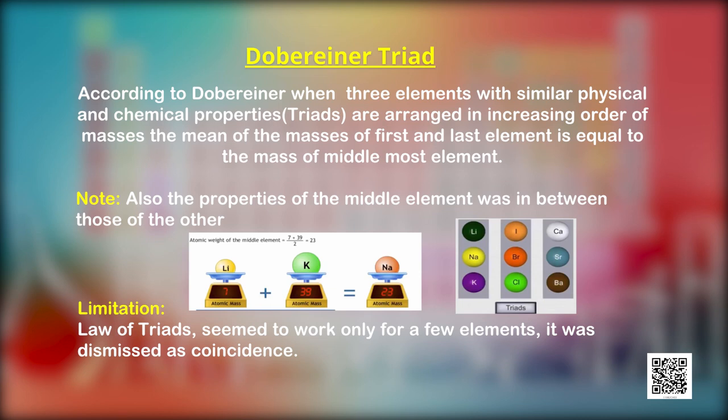Classification of elements into groups and the development of periodic law and the periodic table are consequences of systematizing knowledge gained by scientists through observations and experiments. The German chemist John Dobereiner in the early 1800s was the first to consider trends among properties of elements. When three elements called triads with similar properties were arranged in increasing order of masses, the mean of the masses of the first and last element equals the mass of the middle element. Since this law of triads seemed to work only for a few elements, it was dismissed as a coincidence.